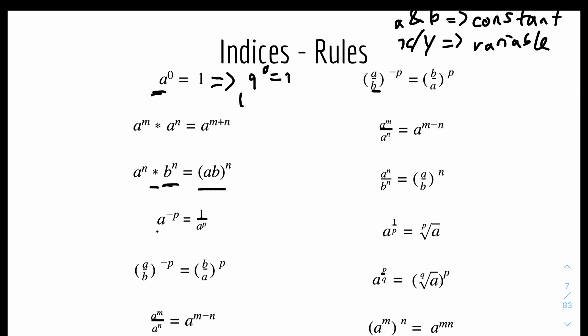The fourth rule is: A to the power of minus P equals 1 over A to the power of P. The key thing is to get rid of this negative sign. For example, 9 to the power of minus 2 equals 1 over 9 to the power of 2. Notice how we got rid of the negative power, converting it to a positive power.